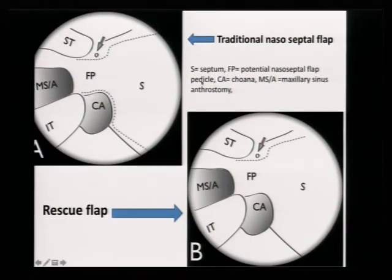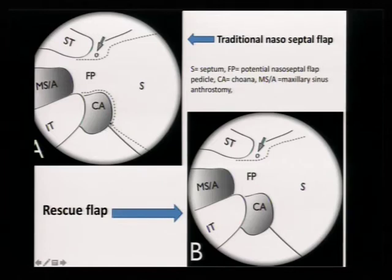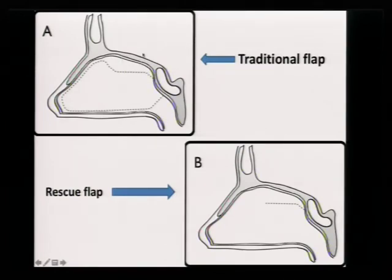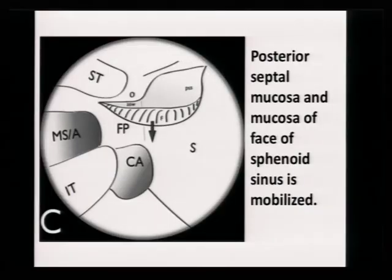Regarding the Hadad flap: one superior cut and one inferior cut. You can extend it more inferiorly if the defect is large, coming onto the floor of the nasal cavity to make a large flap. There is also the rescue flap, which has only one cut, whereas the traditional flap has a superior and inferior cut. The superior cut should be about 1 cm below the top because the olfactory fibres are there. If you need to reach the anterior cranial fossa, make a cut, take out the perpendicular plate, and reflect it — you can still save olfaction.